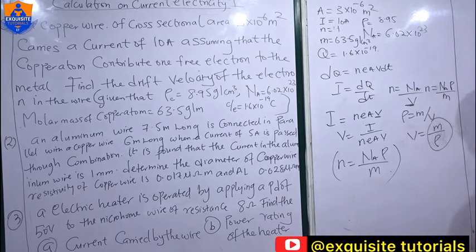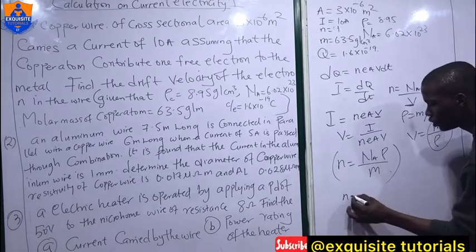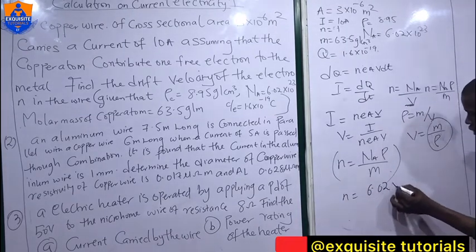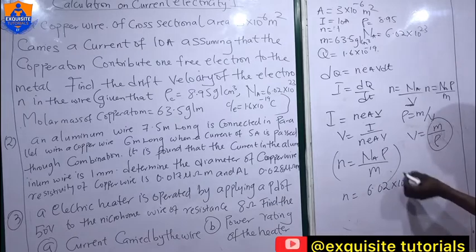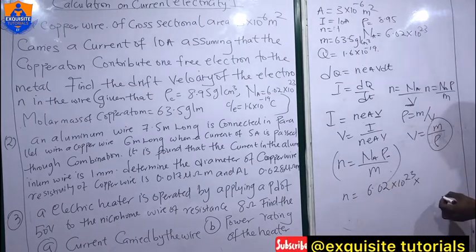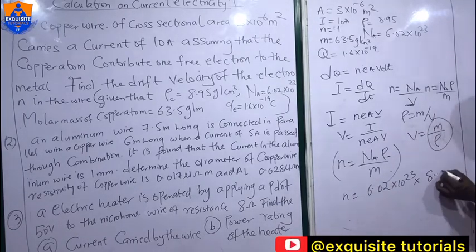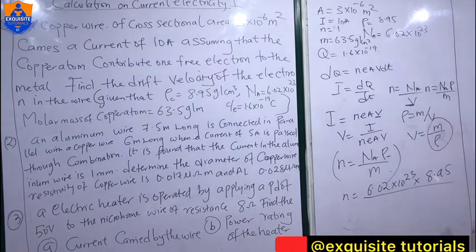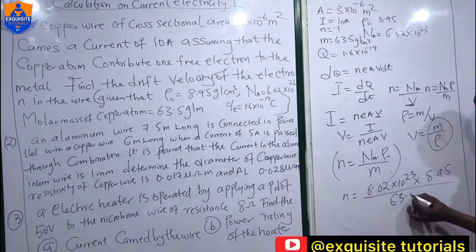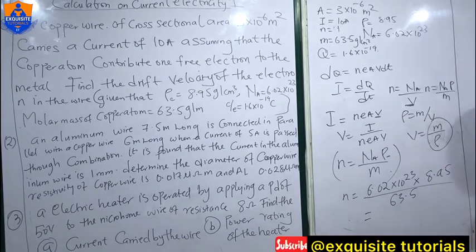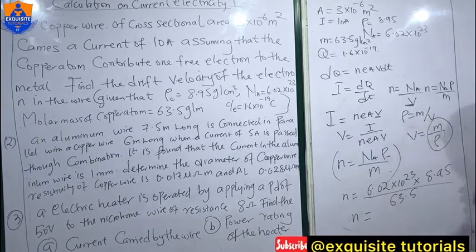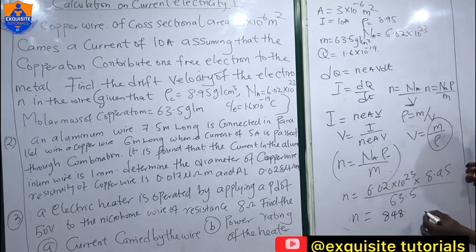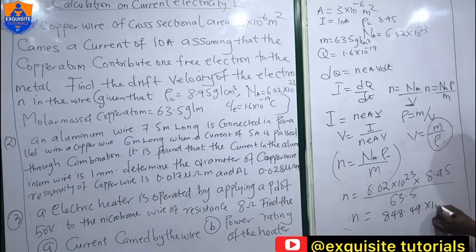Now let's calculate our value for n: 6.02×10²³ times the density 8.95, divided by the molar mass 63.5. Solving this gives n = 848.49×10²⁰.